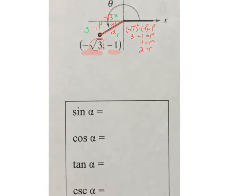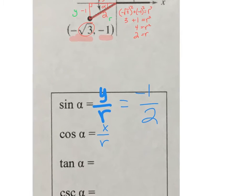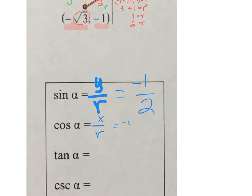The sine is a ratio of the y over the r, so the sine of this angle is going to be negative 1 over 2. The sine is negative because the y value is negative. The cosine is a ratio of the x to the r, so the x is negative root 3 and the radius is 2, so negative root 3 over 2.